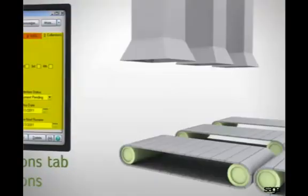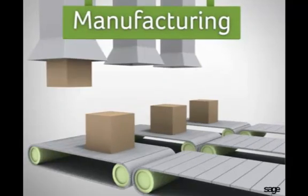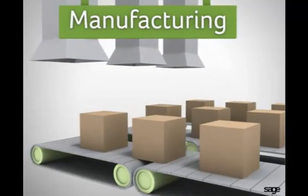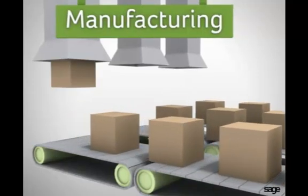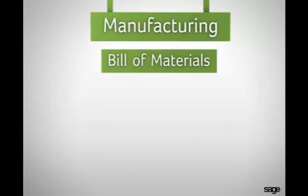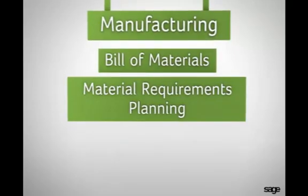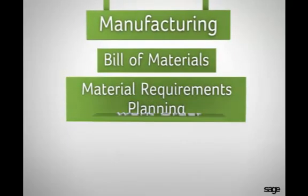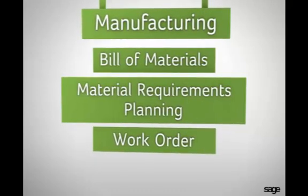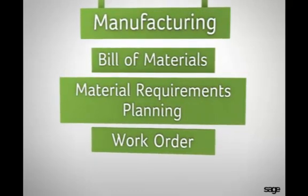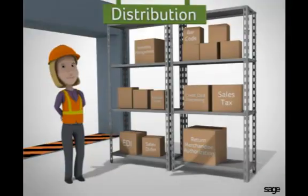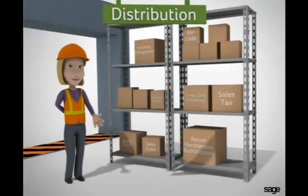Add powerful Sage ERP MAS 90 manufacturing modules to manage the workflow of your entire manufacturing process, from procurement to production lines to completion. For example, gain visibility of all your components by creating multi-level bills, produce precise, informative reports, and streamline the allocation of sub-assemblies during your manufacturing process. Get your products to market more effectively.